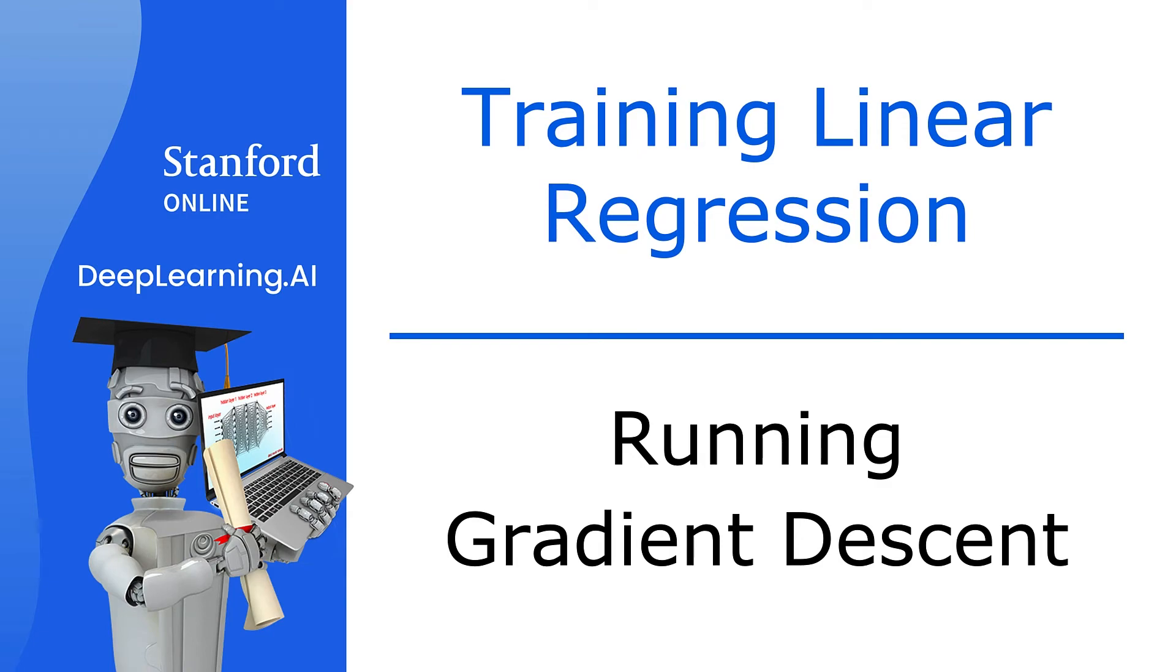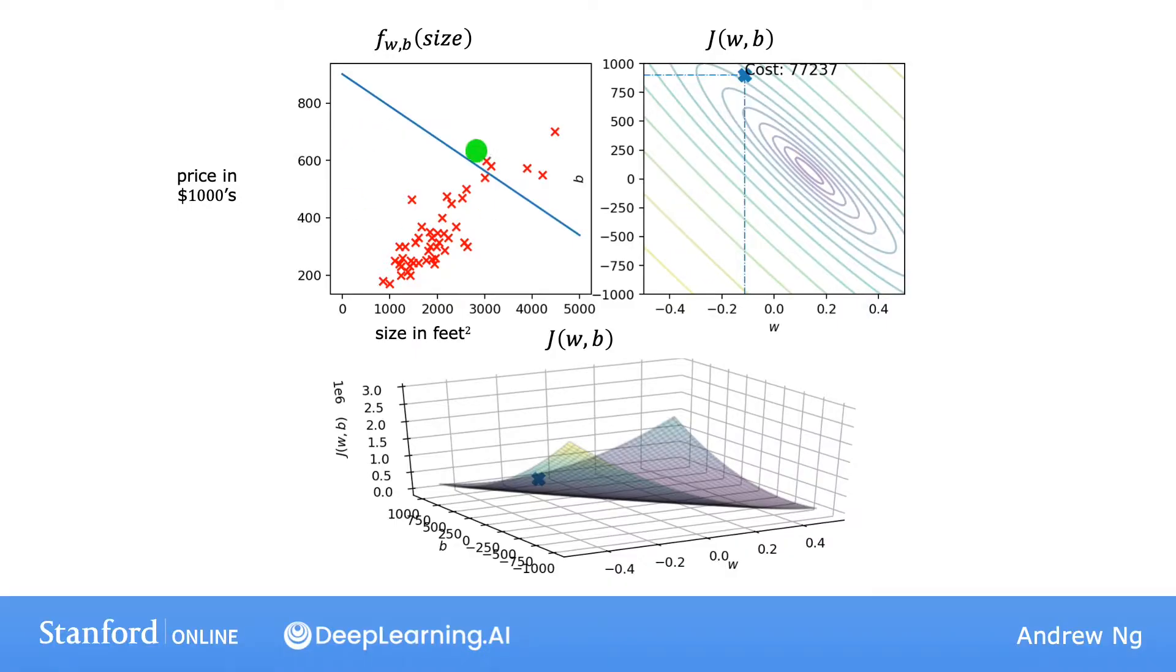Let's see what happens when you run gradient descent for linear regression. Here's a plot of the model and data on the upper left, and a contour plot of the cost function on the upper right. At the bottom is the surface plot of the same cost function.